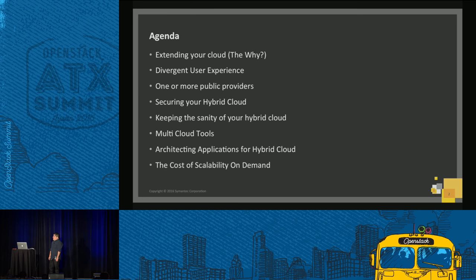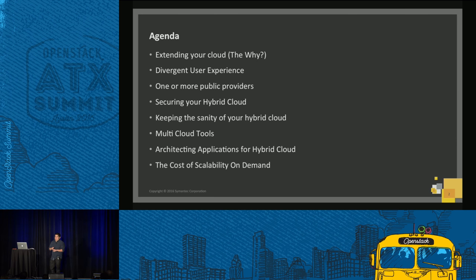Then we're going to talk about something that is a little bit difficult to deal with in hybrid cloud, which is the diverse user experience. Getting into one cloud is easy. Getting into Azure, AWS, Google Compute Engine, and OpenStack — that's a whole different story. There are different features all over the place, so we're going to talk a little bit on how you can mitigate the risk.